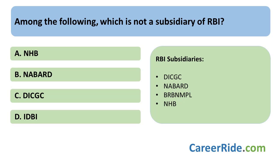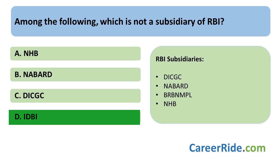Among the following, which is not a subsidiary of the Reserve Bank of India? At present, RBI has only 4 subsidiaries: DICGC, NABARD, BRBNMPL, and NHB. So the correct answer is IDBI. IDBI Bank is not a subsidiary of the Reserve Bank of India — this could be a trick question. Always keep in mind that IDBI at present is a commercial bank. Earlier it was a Development Bank of India, but at present it is only a commercial bank.